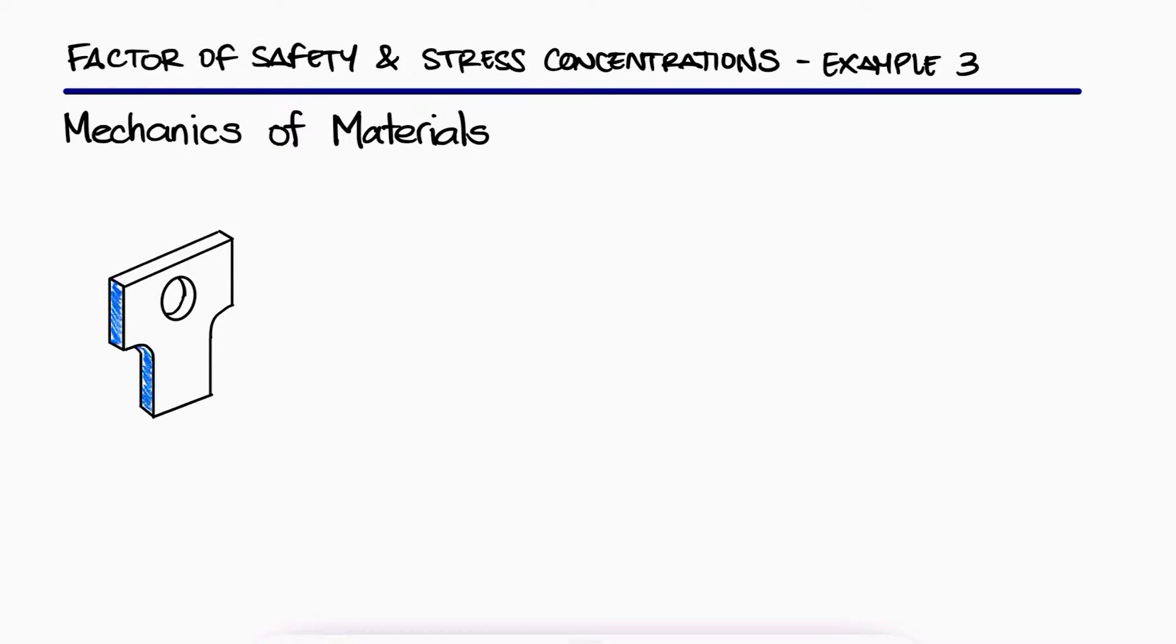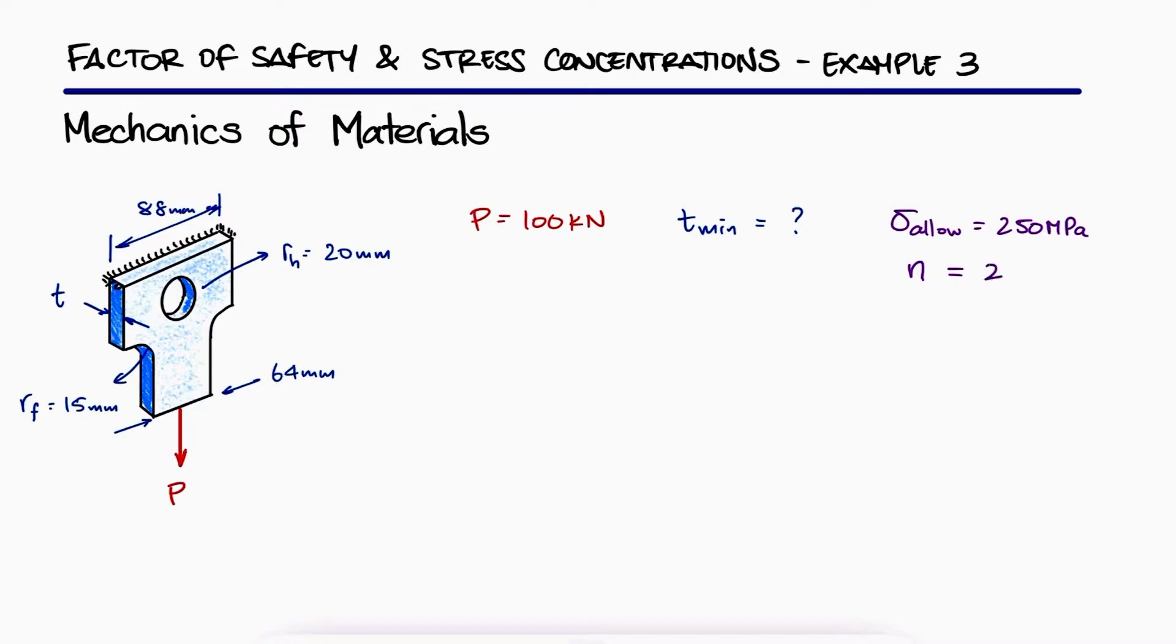For the flat bar shown and an external load P of 100 kN, what would the minimum plate thickness t be if the maximum allowable stress is 250 MPa and we're designing the part with a factor of safety of 2?